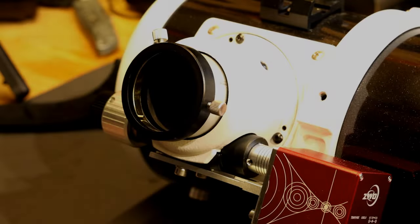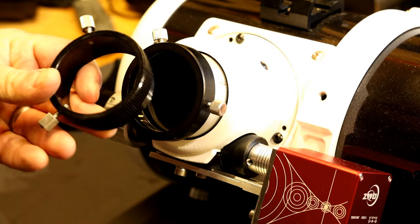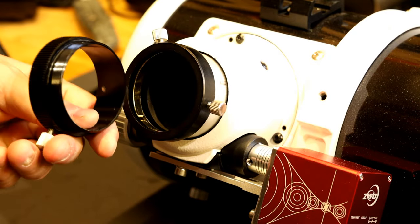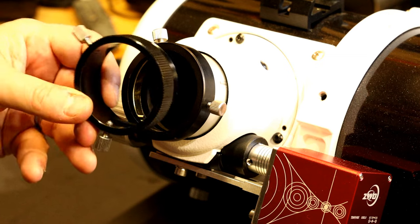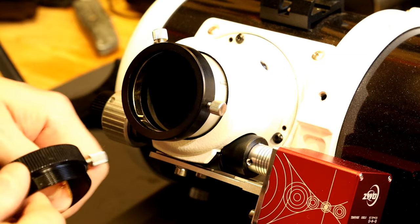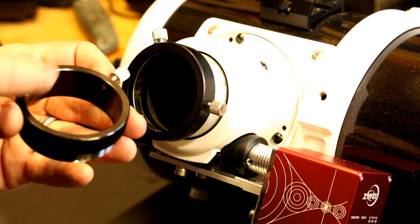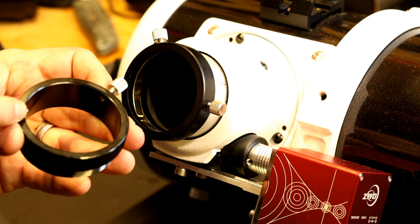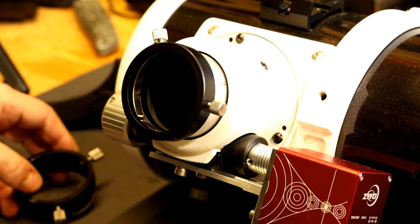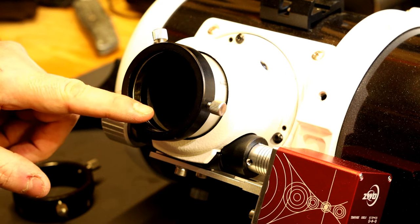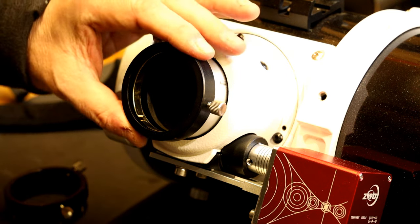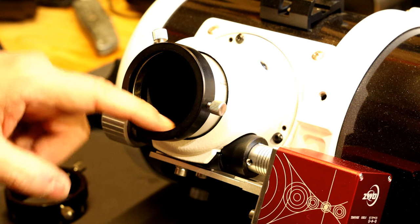One of the first upgrades I did was to replace the top ring that you put your imaging train into. It just has two screws that bite in either side here, and I actually found that this was causing a certain amount of tilt. So it literally unscrews from the top of the tube.